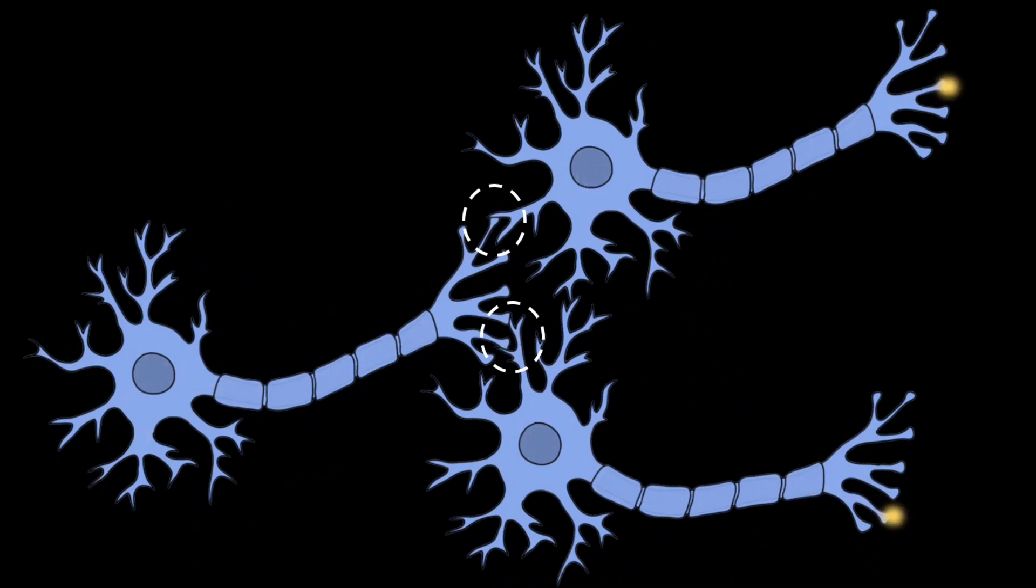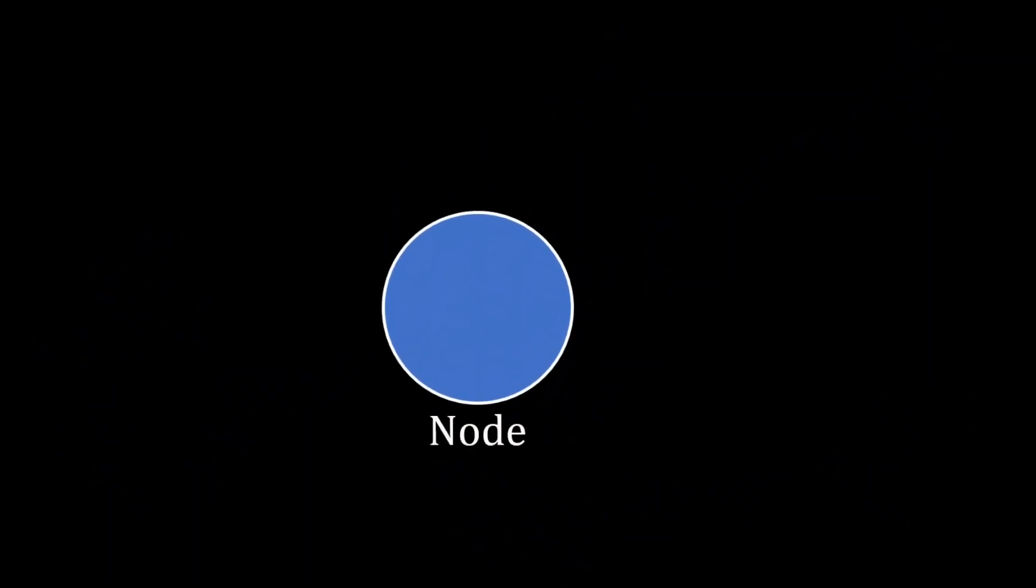An AI neural network captures this biological process mathematically. A node is the simplest building block of a neural network. Connected to this node, we have inputs. These could all be individual numbers which we can label as x. A numerical output exits the node, which we can label as y.